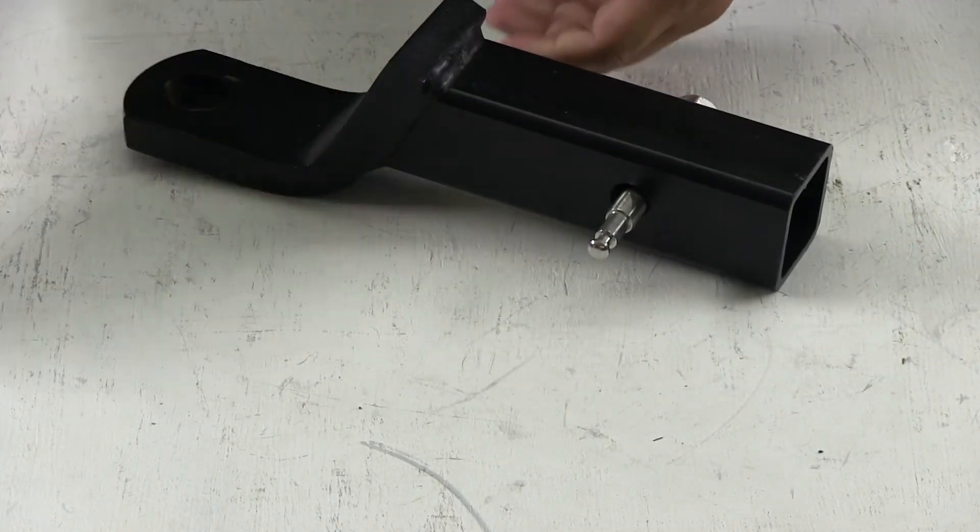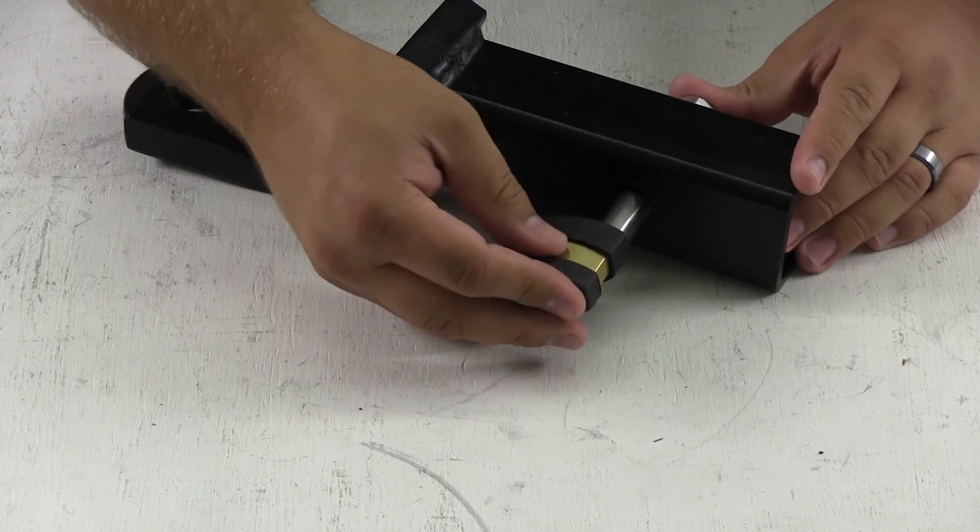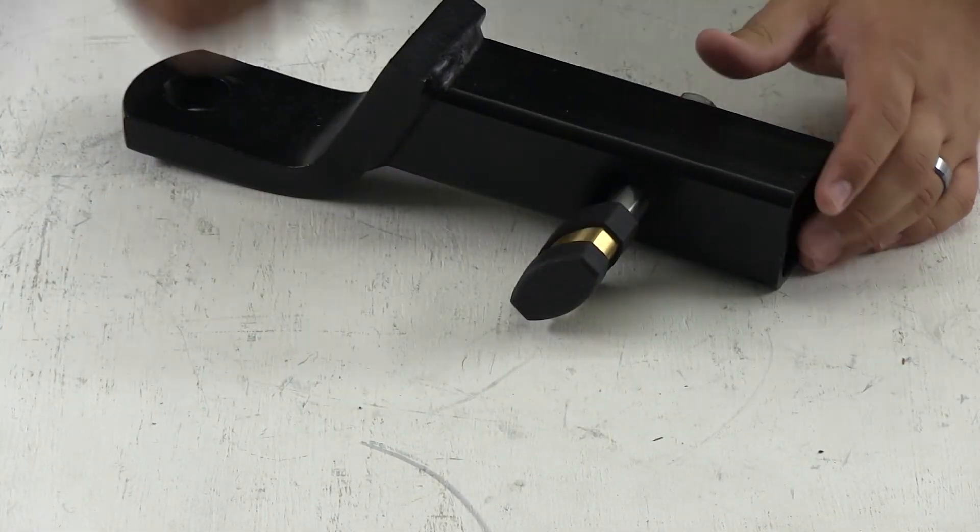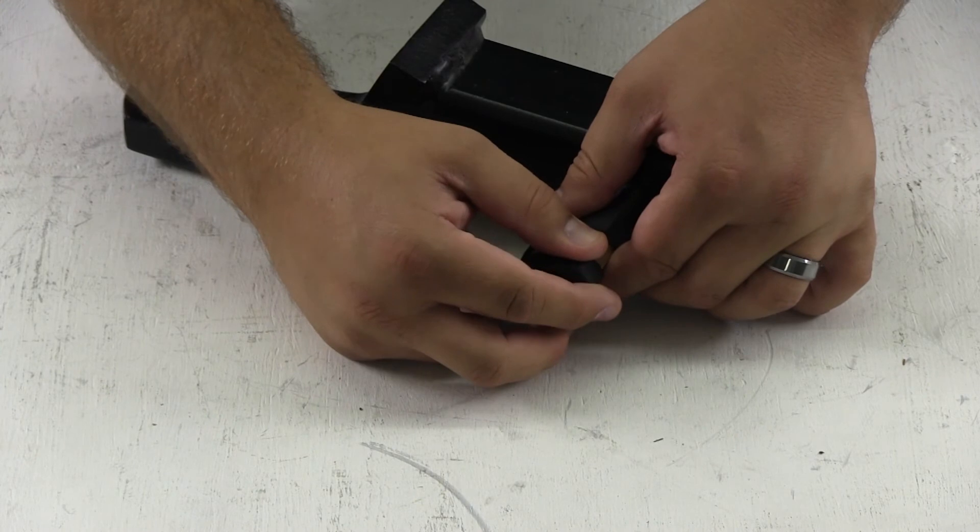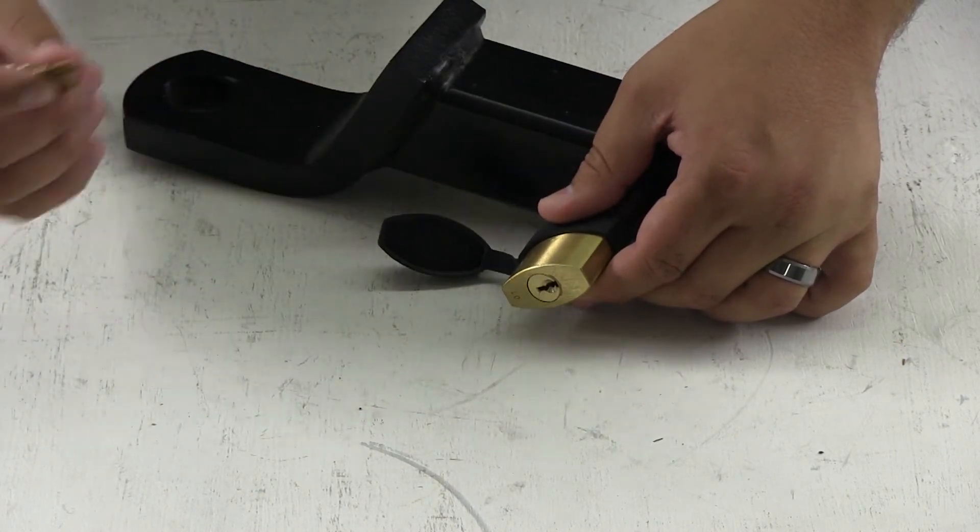Then on the opposite side, you would affix the lock. The lock is made of brass and has a rubber cover to help keep moisture out of the lock.